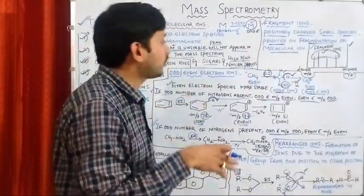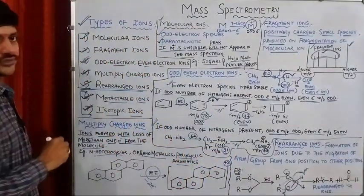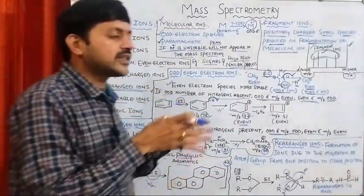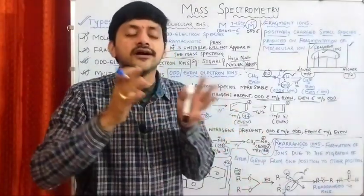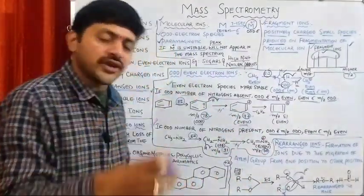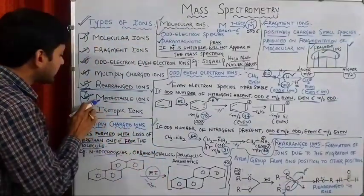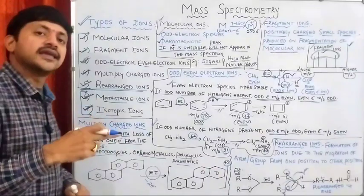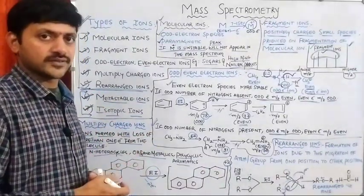So this is all about the first five types of ions, which are produced during the ionization or fragmentation process. We are going to have a brief discussion on metastable ions and isotopic ions in separate videos.